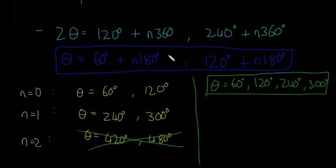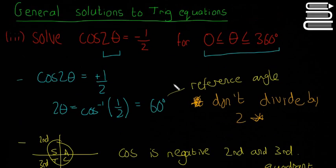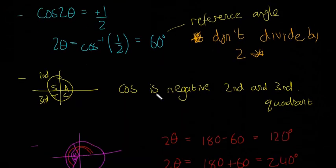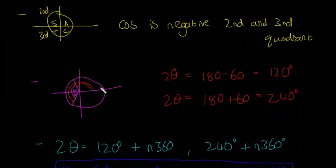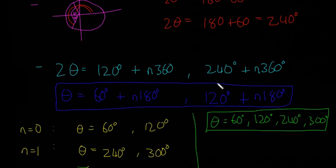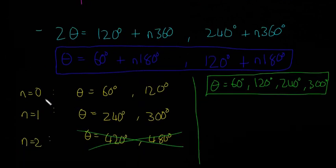Hopefully that makes sense. It's the same method you follow every time if they give you a coefficient before theta or a specific range. You get your reference angle, find where cosine is negative — in this case 2nd and 3rd quadrants — draw your angles measured from the positive x-axis, find the general solution, then divide by 2. If they ask for a specific range, try n equals 0, 1, 2, 3, etc., until you reach the limit.